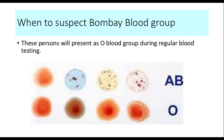When do we suspect a person of Bombay blood group? Ideally, when we do normal screening of a person for various blood groups, these people will be detected as O blood group. We use anti-A, anti-B, and anti-AB reagents. In all three reagents, these people will not react because they don't have the A or B antigens, so they will be labelled as O.